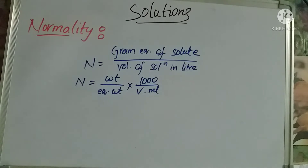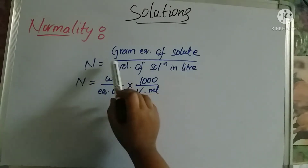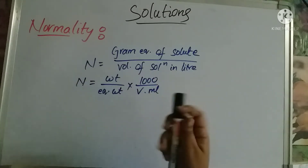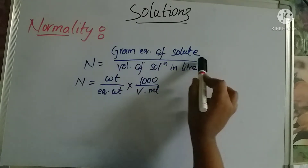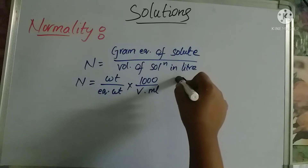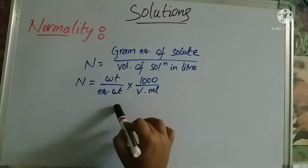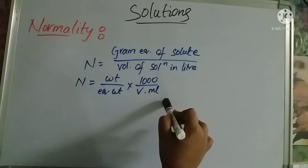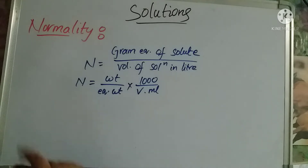What is normality? Normality is nothing but gram equivalent weight of solute divided by volume of solution in liters. The formula is: N = (weight / equivalent weight) × (1000 / volume in mL). This is our normality formula, just as we did for molarity and mole fraction.